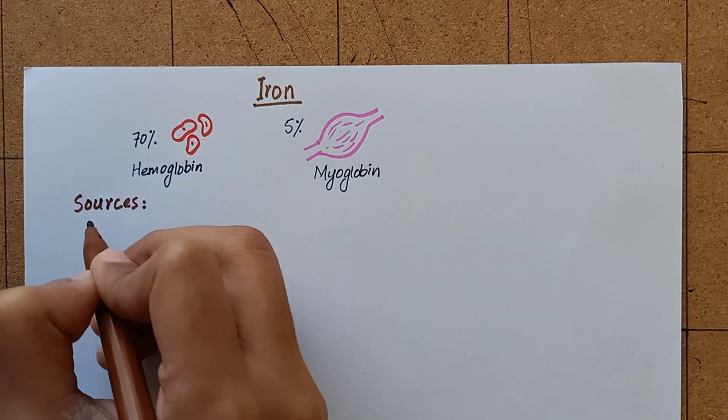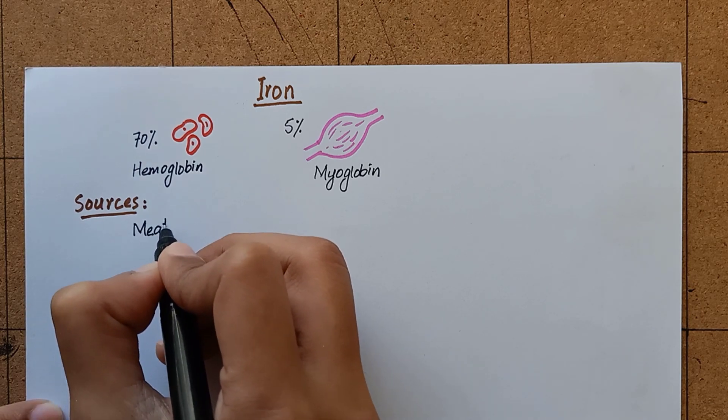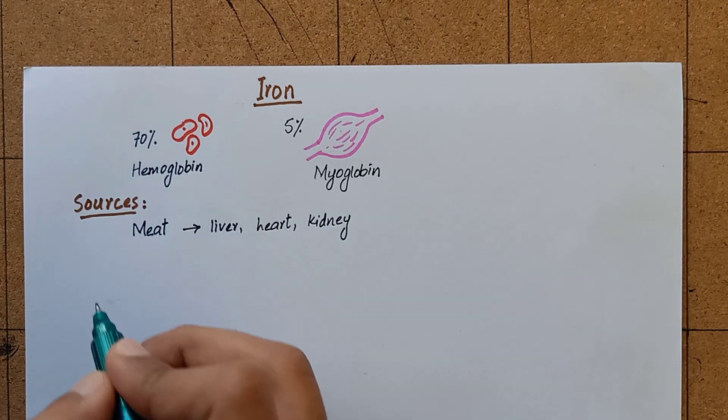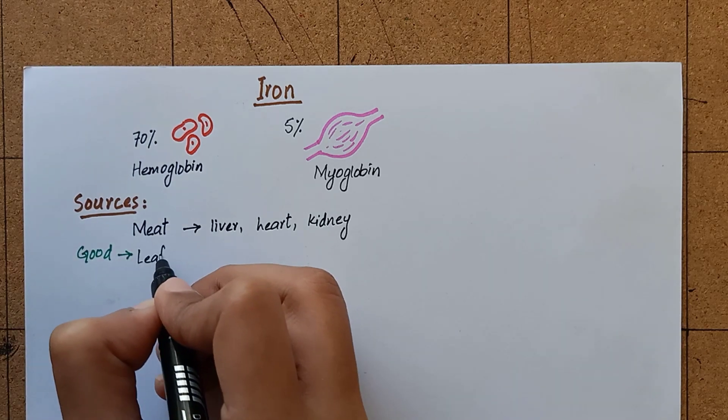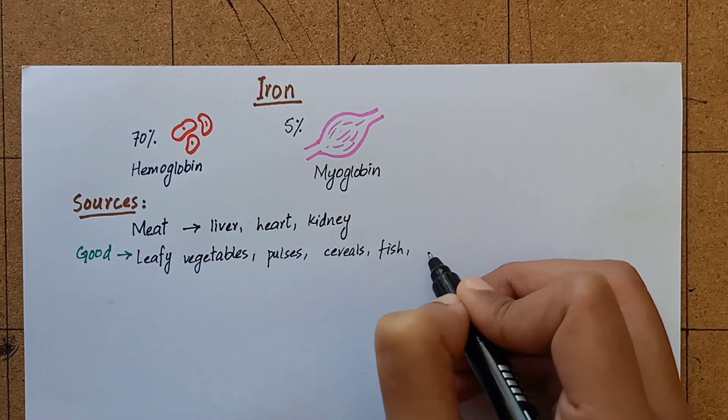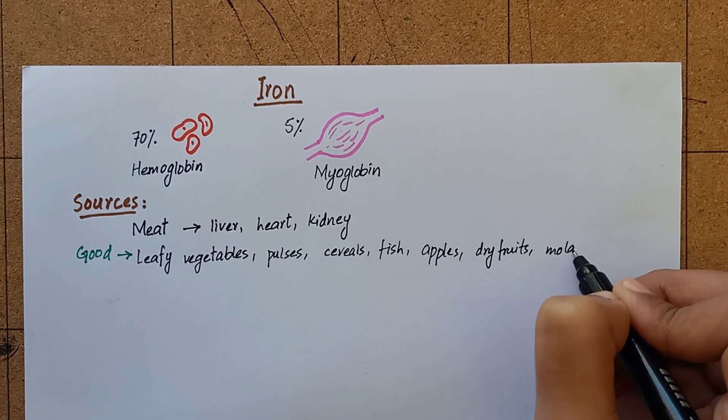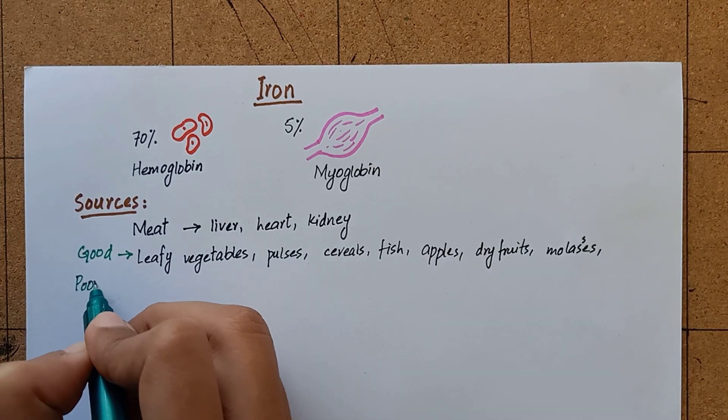Foods that are rich sources of iron are meat, especially liver, heart and kidney, leafy vegetables, pulses, cereals, fish, apples, dried fruits, and molasses are also good sources of iron.